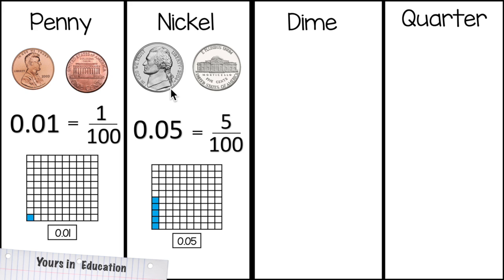Here we have the nickel, and on the heads, or the obverse, we have Thomas Jefferson. And on tails, which is the reverse, we have Monticello.